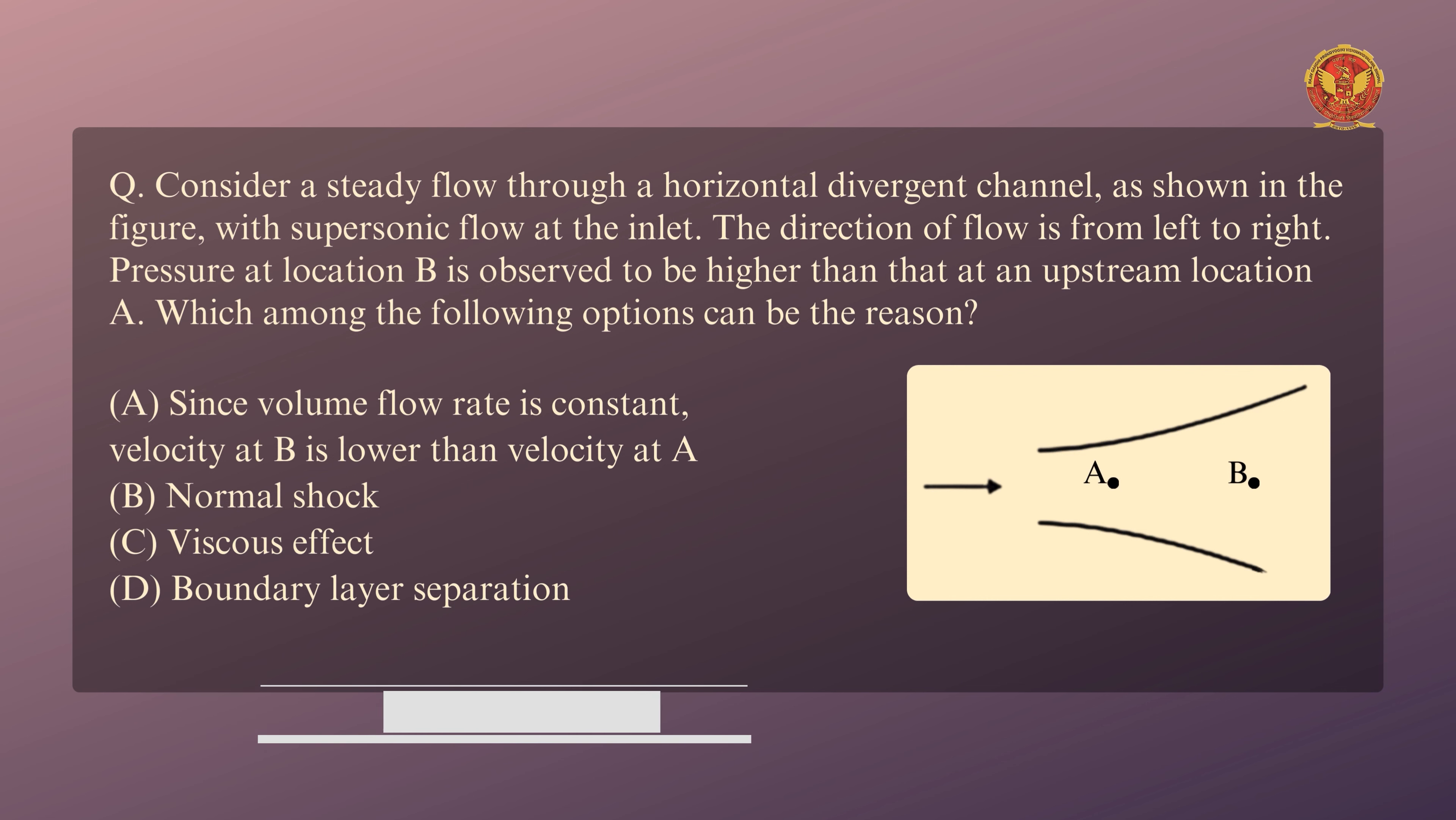Consider a steady flow through a horizontal divergent channel as shown in the figure, with supersonic flow at the inlet. The direction of flow is from left to right. Pressure at location B is observed to be higher than at an upstream location A. Which among the following options can be the reason?